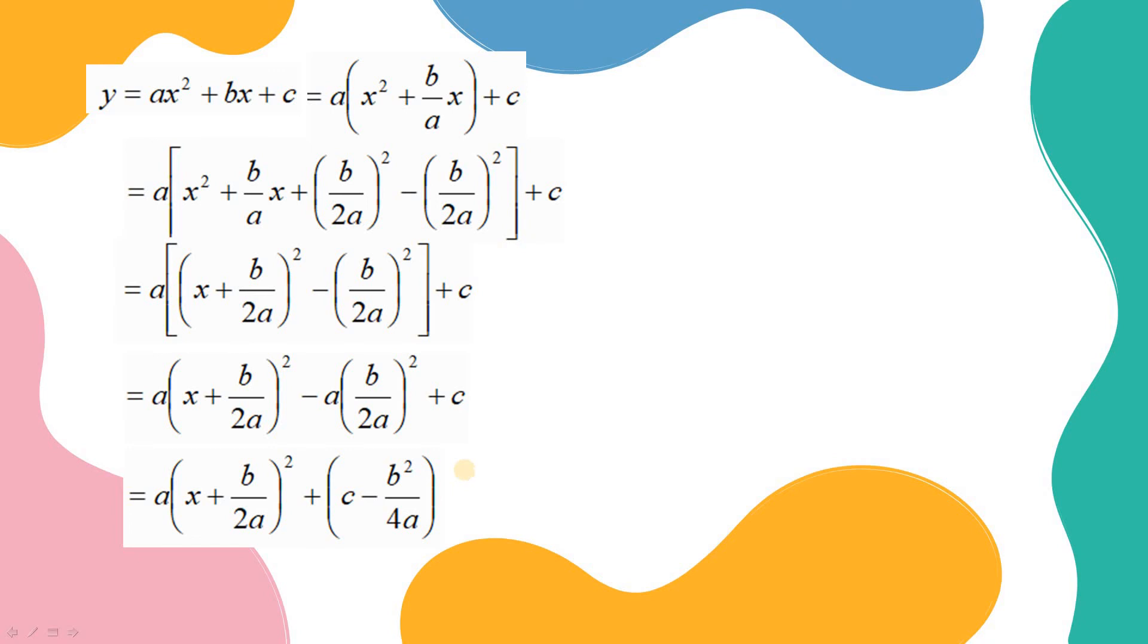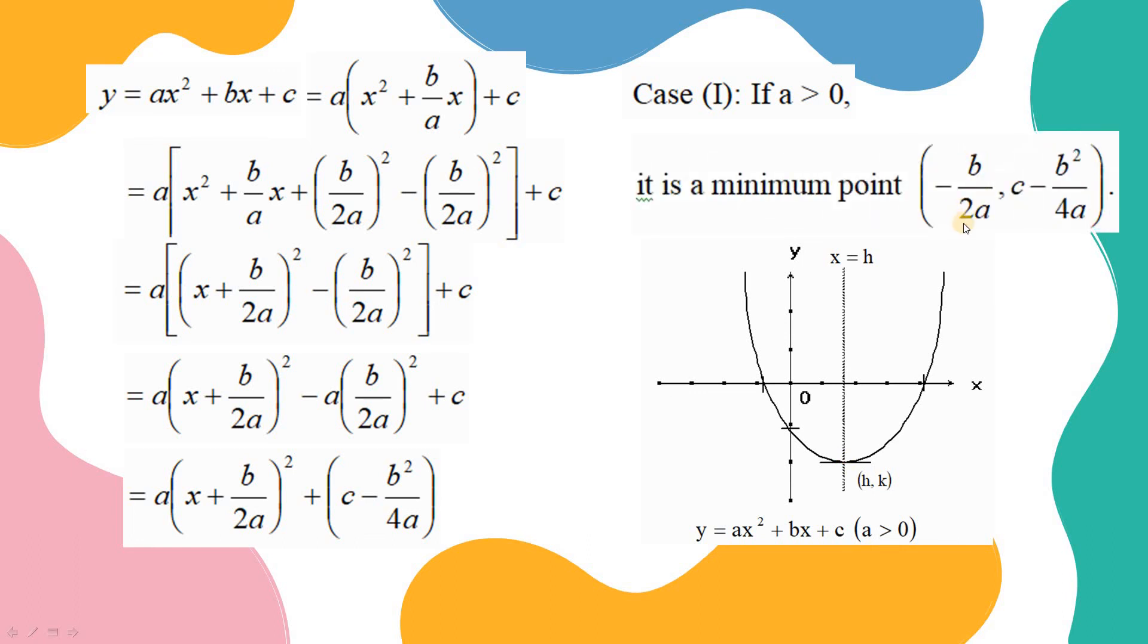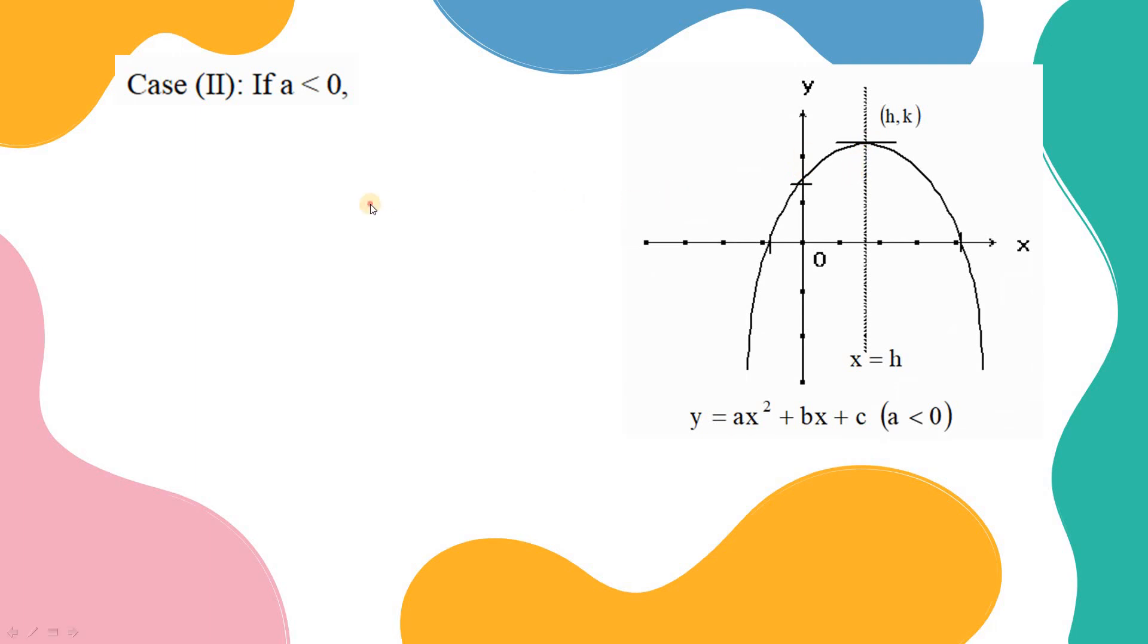For the vertex, we can observe the vertex directly. For the case a is positive, and the graph should be open over, so the vertex is minimum point. The graph is open over like this. And the vertex is equal to minus b over 2a, c minus b over 2a squared over 4a.